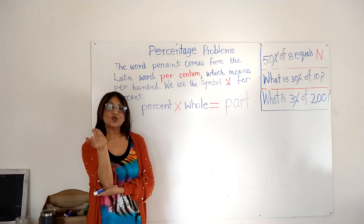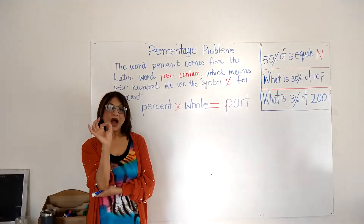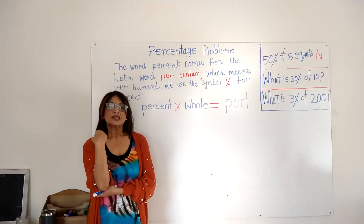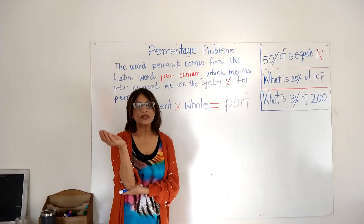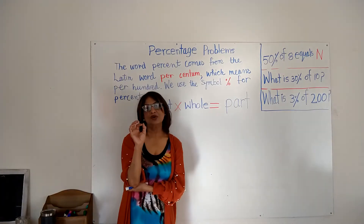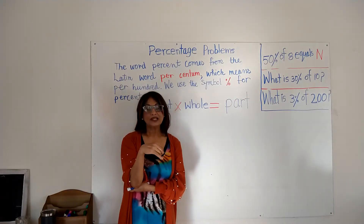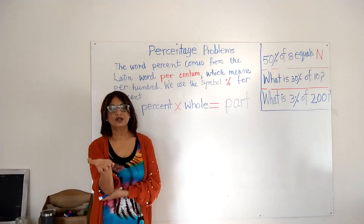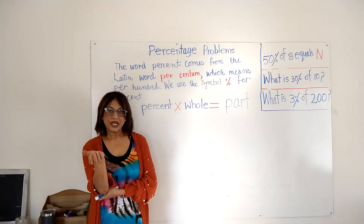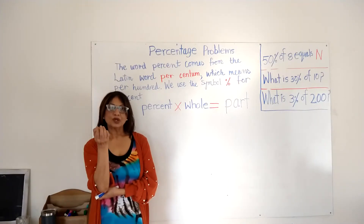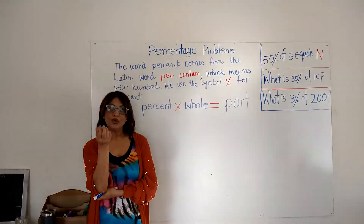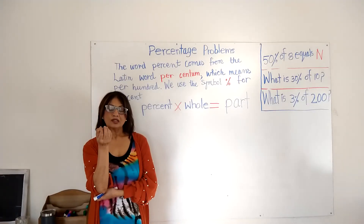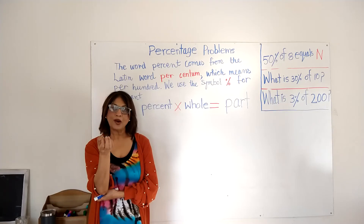There are three types of problems. The first one is when the part is unknown. The second one is when the whole is unknown. And the third one is when the percent is unknown. But today we are going to only solve percentage problems when the part is unknown.